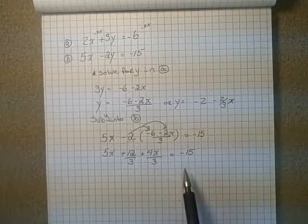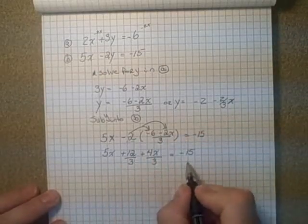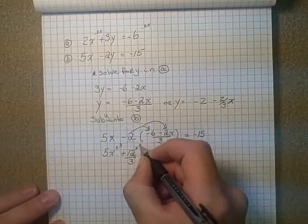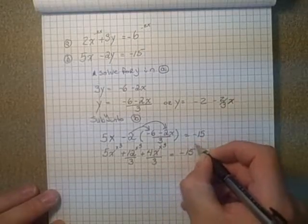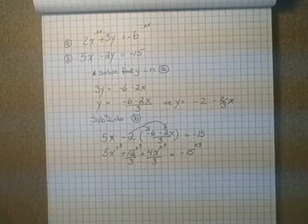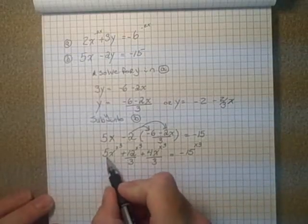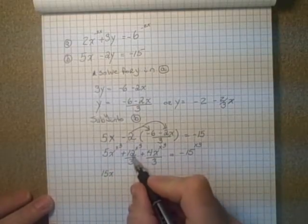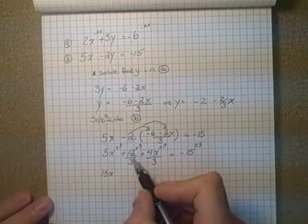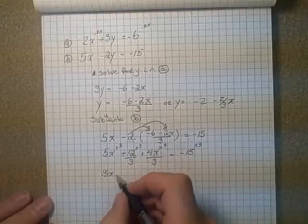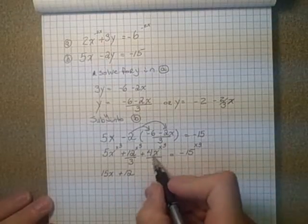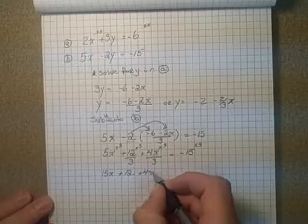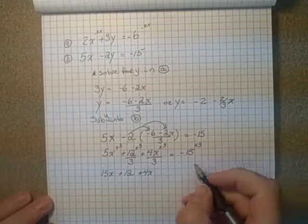So we want to eliminate this denominator. And one way you can do that in solving equations is multiply everything in the equation, every single value, by 3. So if we do that, we should be able to eliminate the 3s on the bottom. So multiply this by 3, multiply this by 3, multiply this by 3, and multiply this by 3. That would not change our answer at all. It would just enlarge everything by the same factor. So 5x times 3 is 15x. 12 times 3, that would be 36 divided by 3, which would give us 12 again. Again, 4x times 3 would be 12x divided by 3, that would give us 4x. And negative 15 times 3 is negative 45.